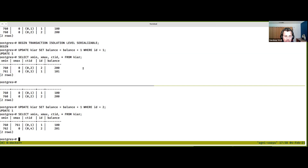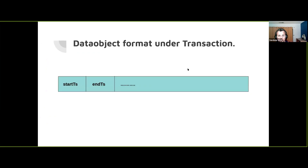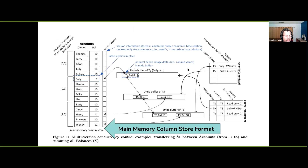Let me go back to my slides. I hope this demo gave some idea of how database systems manage versions of data objects and their visibility. Underneath the hood they're using metadata like timestamps during transactions. Now let's focus back on the paper, pull each component apart, and try to understand them.